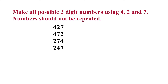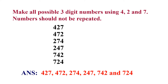We will interchange the last two digits to get 247. Next, we will start with the third digit, that is 7. The first three digit number that will start with 7 is 742. Now, interchange the last two digits to get 724. So, the answer we can write like this: 427, 472, 274, 247, 742 and 724.